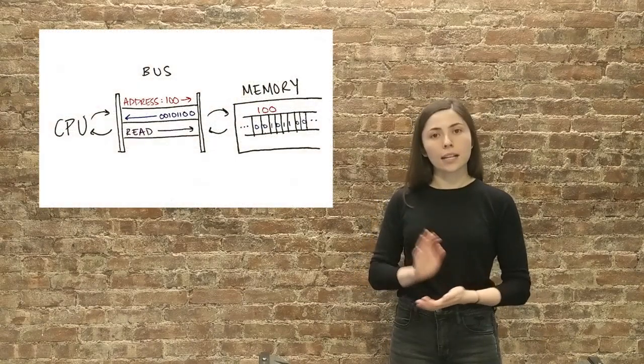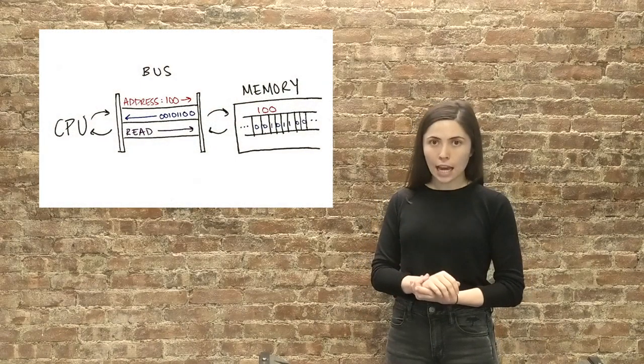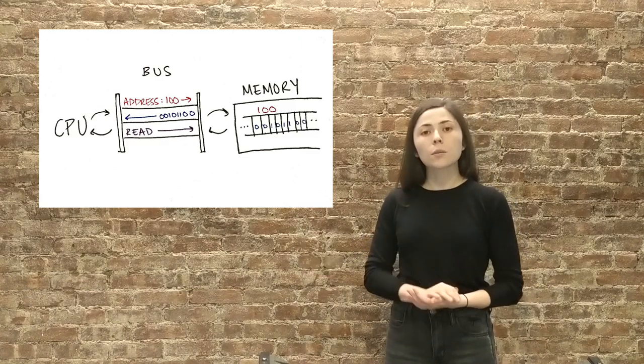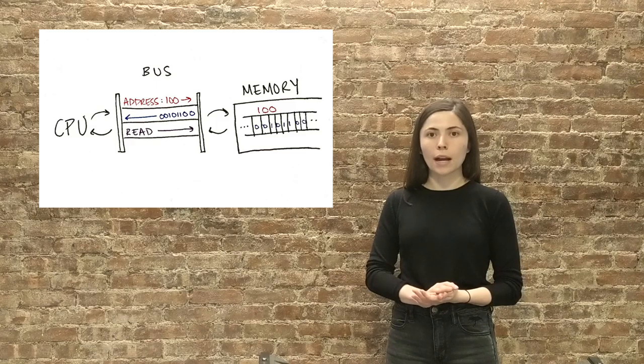So let's say our CPU wants to read from memory. The CPU would then execute a load instruction. It would set the address wire to the particular address in memory it wants to access, and then it would set the value on the control wires to read.